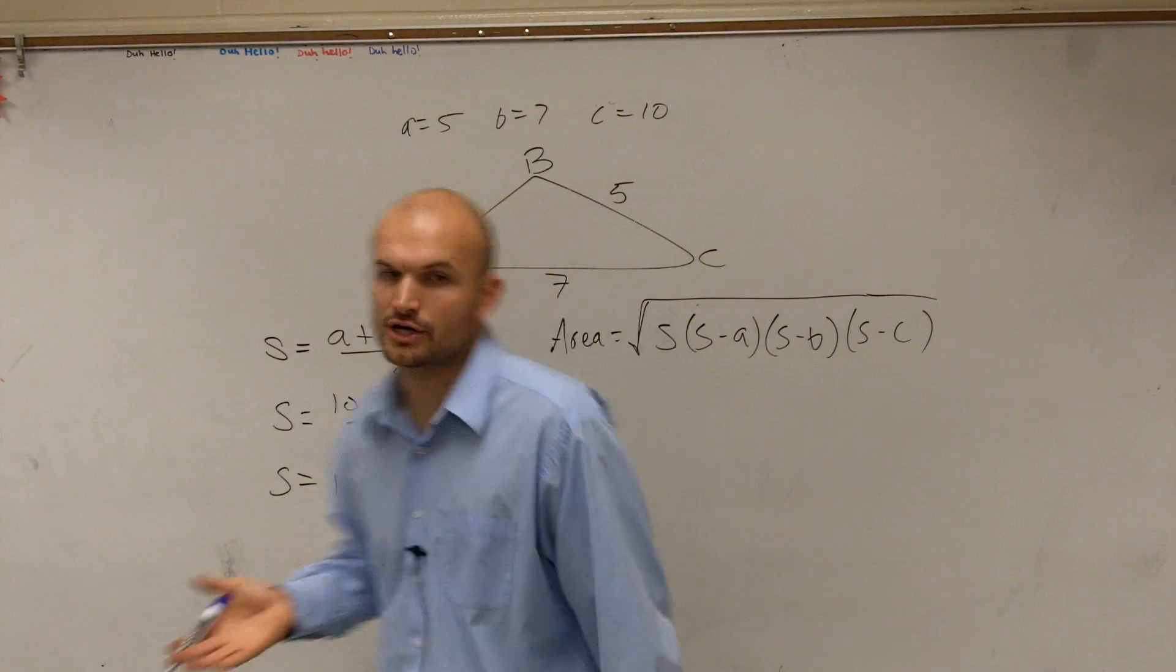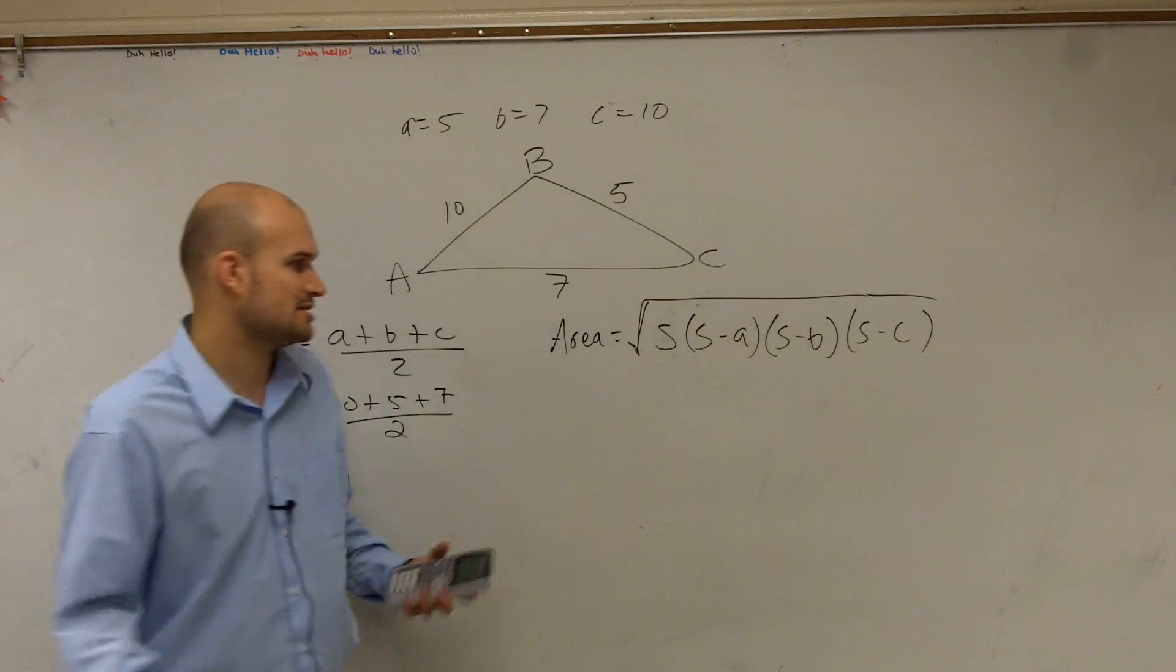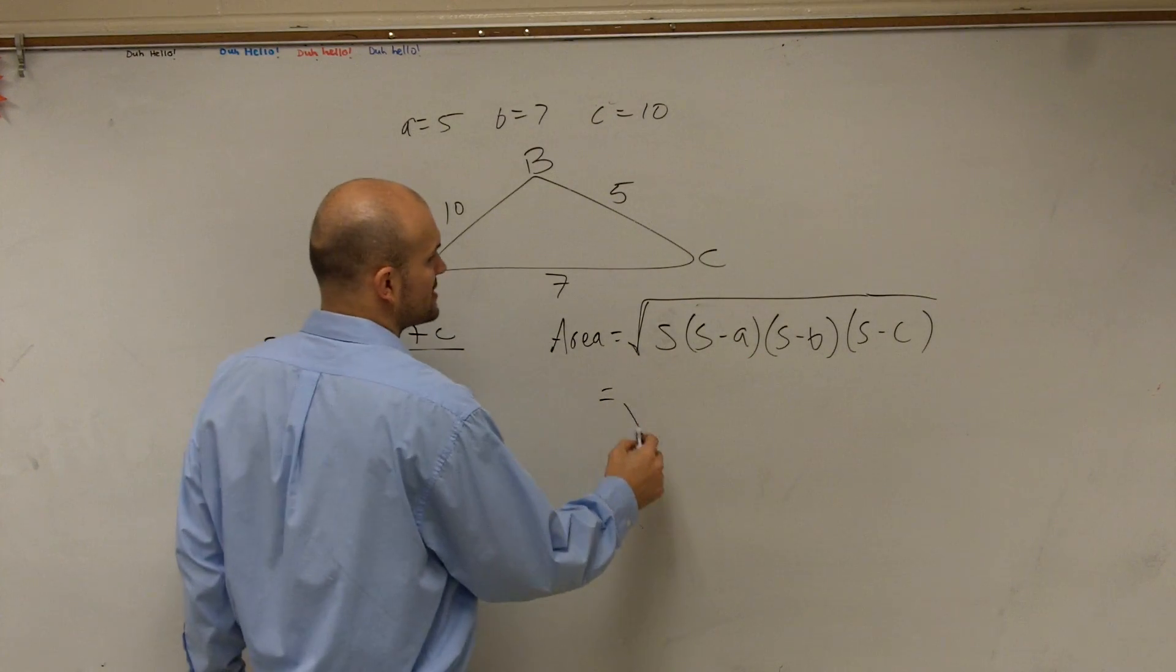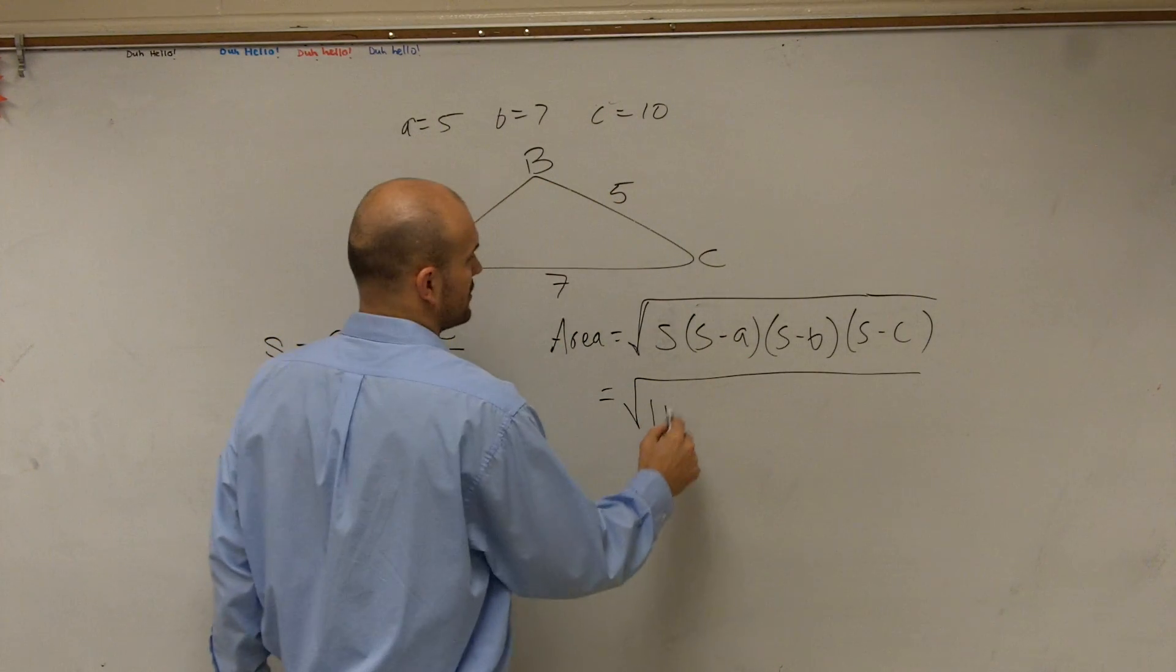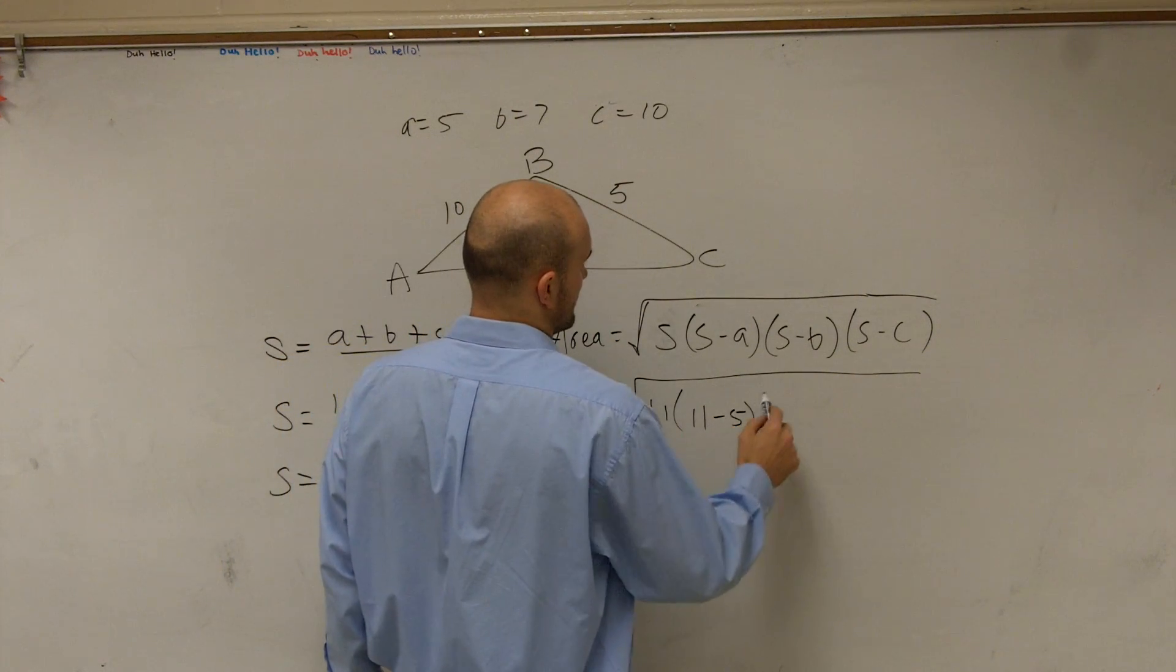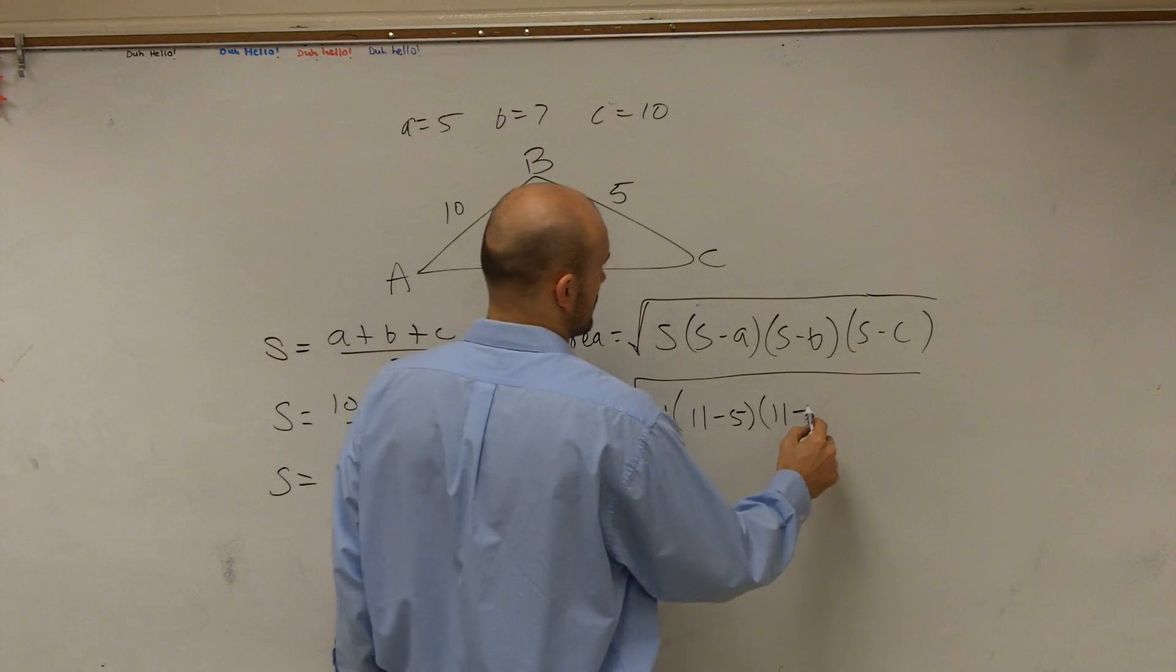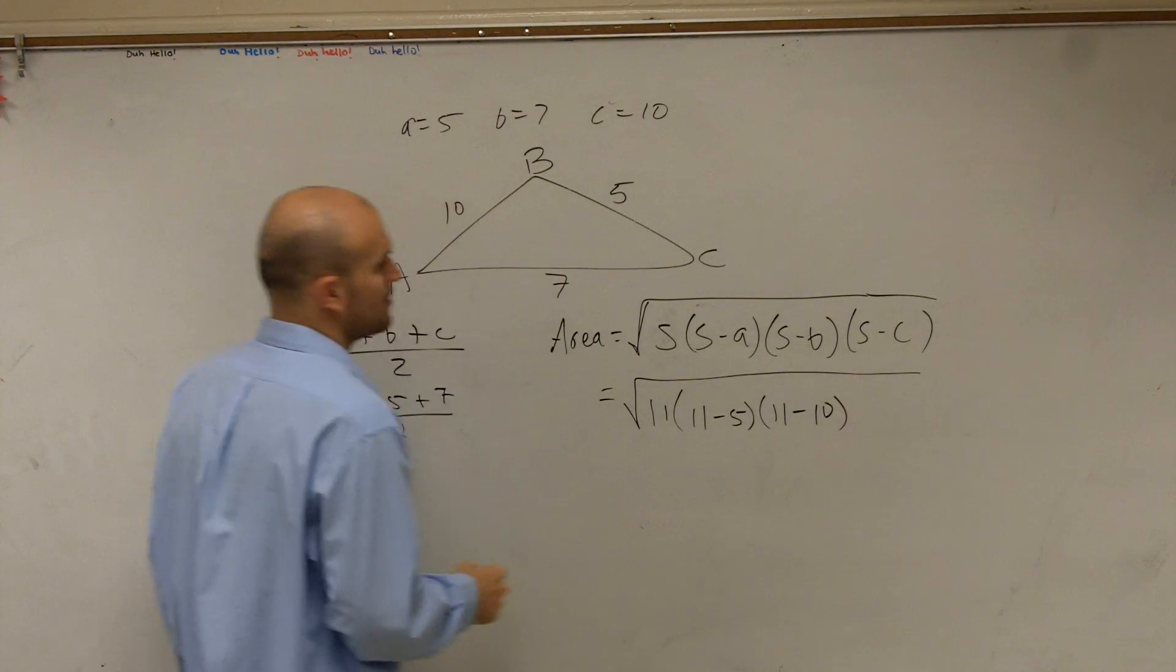So the first thing you're going to do is, once you determine what s is, then you're going to just plug it in. So let's just plug in our values. So we know the area is going to equal the square root of 11 times 11 minus a, which is 5, times 11 minus b, which is 10, and 11 minus 7.